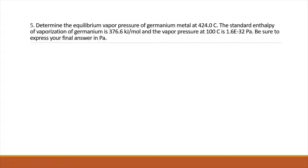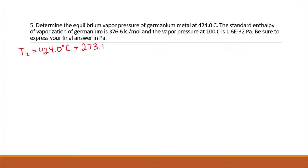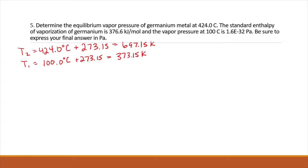Number five: we want to determine the equilibrium vapor pressure of germanium metal at 424 degrees Celsius. We're told the standard enthalpy of vaporization is 376.6 kilojoules per mole, and the vapor pressure at 100 degrees Celsius is 1.6 times 10 to the negative 32 pascals. Express the final answer in pascals. T2 is 424.0 degrees Celsius, which is 697.15 Kelvin. T1 is 100 degrees Celsius, which is 373.15 Kelvin. P1 is 1.6 times 10 to the negative 32 pascals, and we want P2.